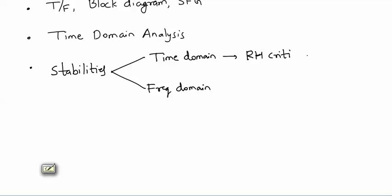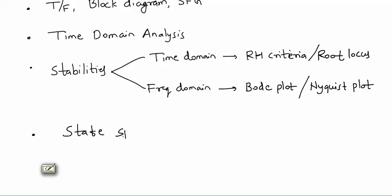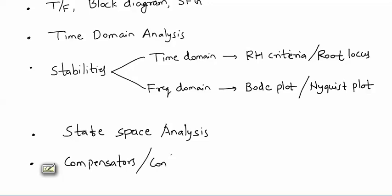The time domain stability techniques are RH criteria and root locus. The frequency domain techniques are Bode plot and Nyquist plot. After covering all four techniques, we will go for state space analysis and then conclude the syllabus with compensators or controllers. This is the entire syllabus of control systems.